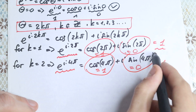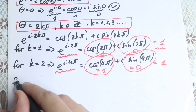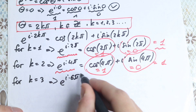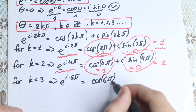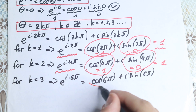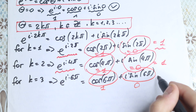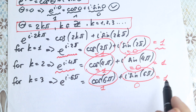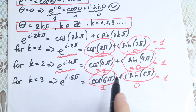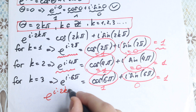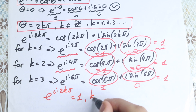Checking one more case: for k equals 3, we get e to the power i times 6 pi equals cosine 6 pi plus i sine 6 pi. Again cosine 6 pi equals 1 and sine 6 pi equals 0, so we get 1. The conclusion is: no matter what integer k is — 1, 2, 3, 4 — e to the power i times 2k pi always equals 1.